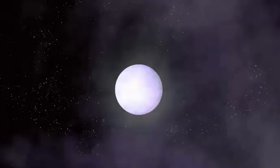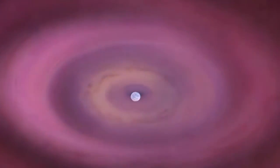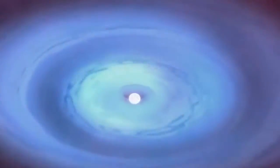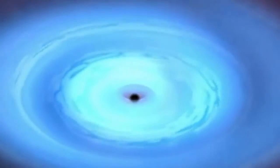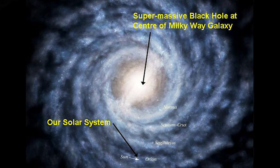When a massive star — at least 25 times the mass of our Sun — runs out of its nuclear fuel, the star explodes as a supernova. What remains is a black hole, usually only a few times heavier than our Sun, because the explosion has blown off much of its material.